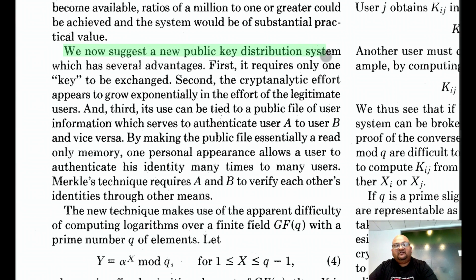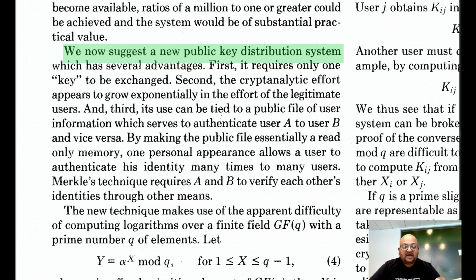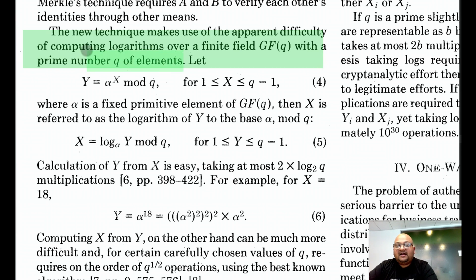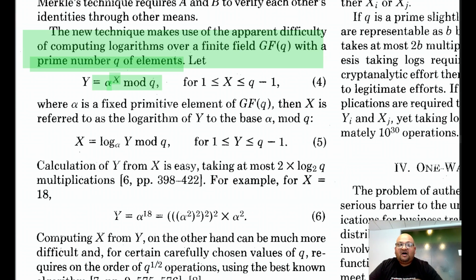Now let's look at the definition of what would later be called the Diffie-Hellman key exchange protocol. The goal is for two parties to arrive at a shared secret key while only communicating on a public channel, so that anyone who heard all the messages going back and forth is still not able to feasibly compute the shared secret key. The proposed scheme rests on the difficulty of computing logarithms over a finite field. If we have a finite field with a prime number q of elements, where alpha and x are members of that field — between 1 and q minus 1 — computing alpha to the x modulo q is easy. However, given only the result of this exponentiation, it is very hard to compute what x would have been.